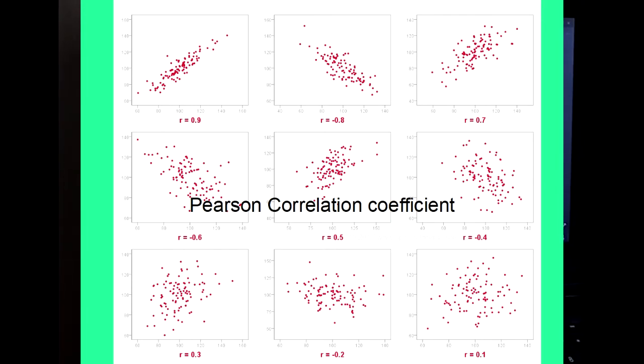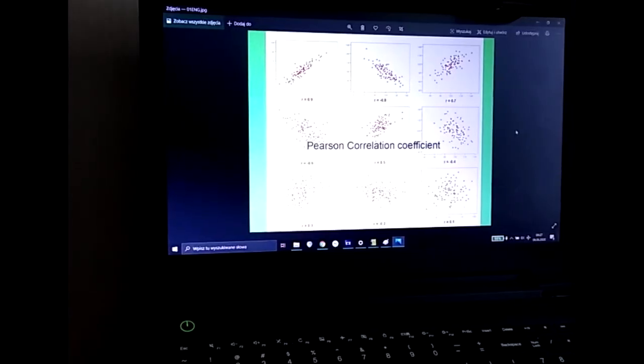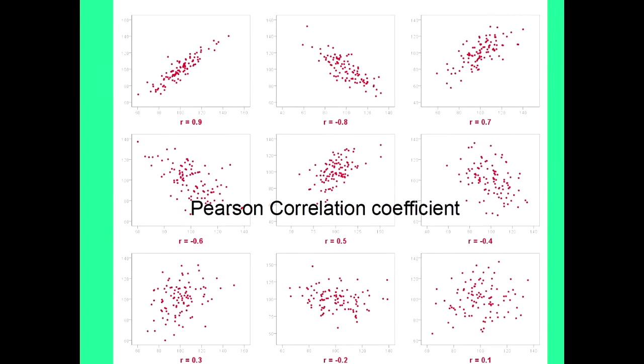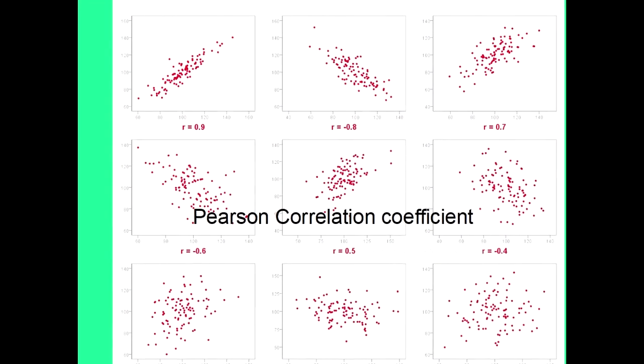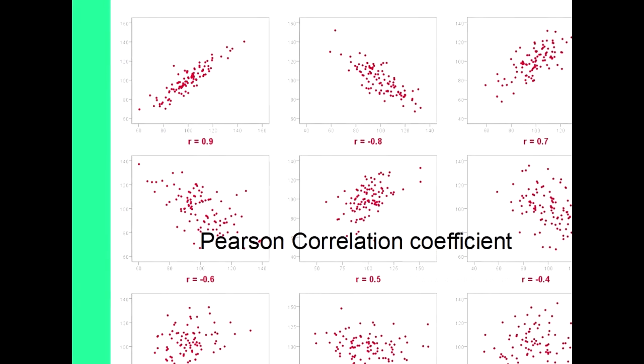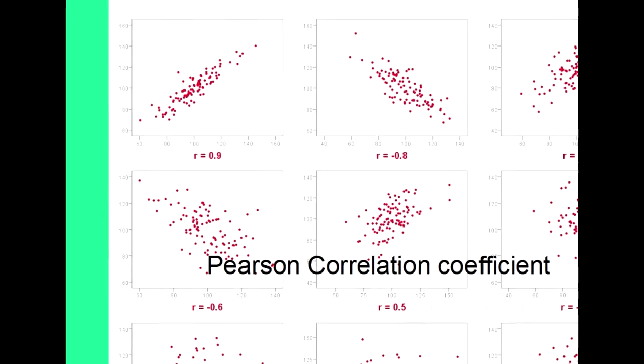Today I would like to speak about Pearson correlation coefficient. If you look at this data at the scatter plot, we can see very interesting configurations. Let's analyze the pictures together with the numbers and try to draw some conclusions.